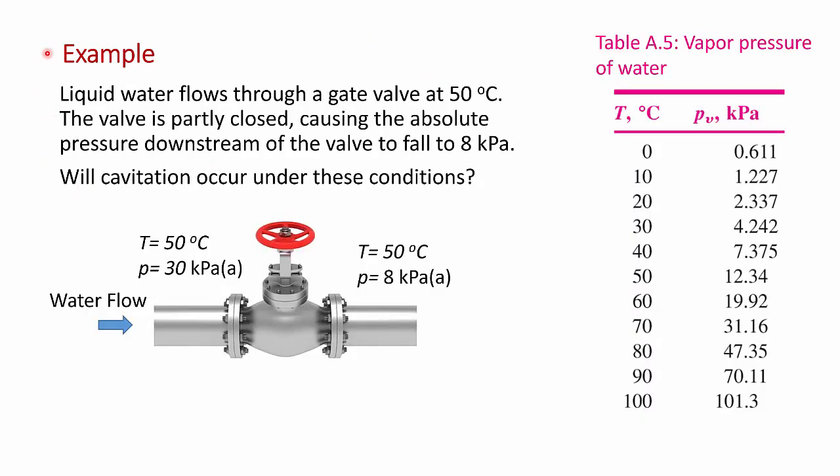So here's an example. Liquid water flows through a gate valve at 50 degrees C and 30 kilopascals. The valve is partly closed, causing the absolute pressure on the downstream side of the valve to fall to 8 kPa. The temperature of the water remains at 50 degrees C. So the question is, will cavitation occur under these conditions? To answer that question, I've included the tabular data for the vapor pressure of water. So take a moment, maybe pause the video, think about this.